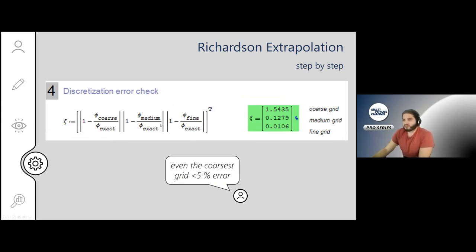All right, and after that, what you can do is to check your discretization error. So basically just take the relative values, and here you see that even with the coarse grid, we are about 1.5 percent off, and generally that's considered acceptable.